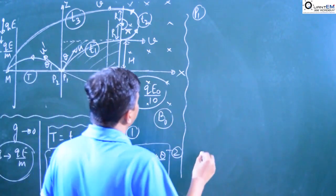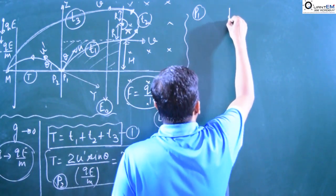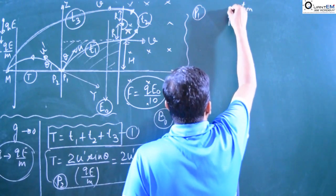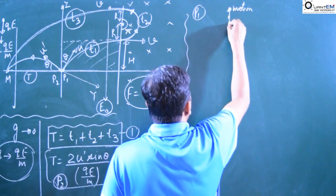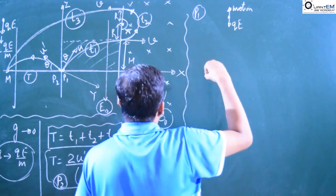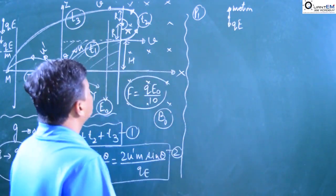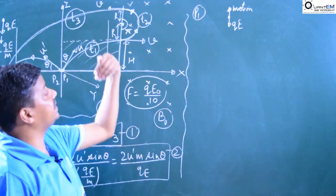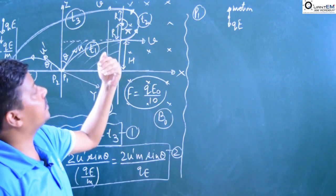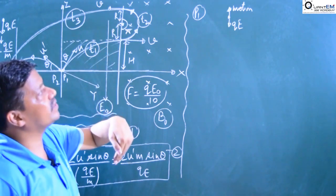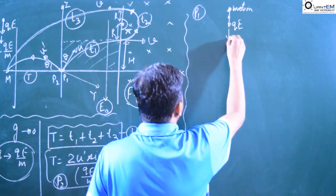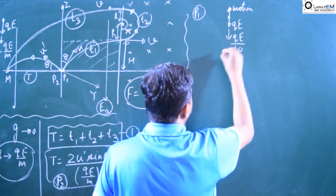With air resistance present, the particle is moving in the upward direction. The electrostatic force qE acts on it. Since motion is upward, the resistance force acts against the motion — downward. So as the particle goes up, resistance force is downward (against the motion). Therefore the air resistance here is qE/10, acting downward.